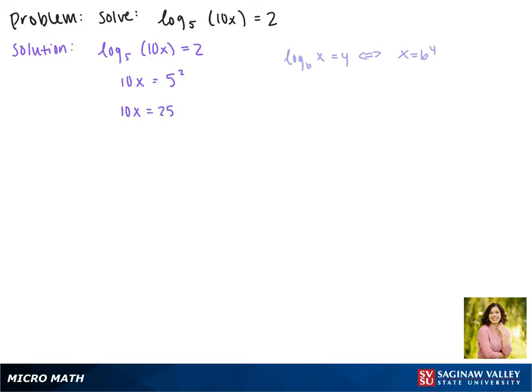This gives us 10x equals 25. Dividing both sides by 10 gives us x equals 25 over 10. Both can be reduced by 5 so this gives us x equals 5 over 2.